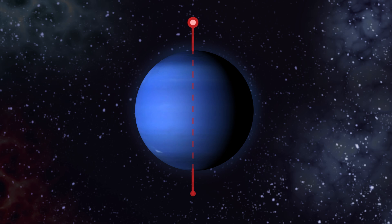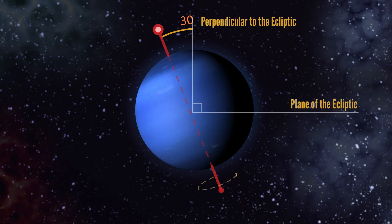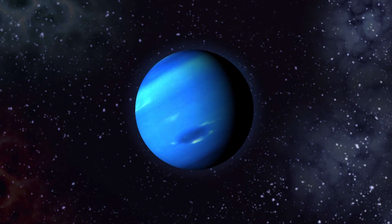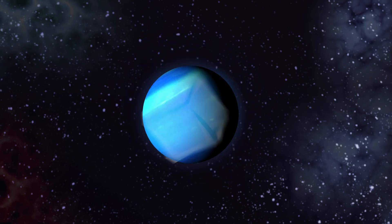Neptune is so far away and orbits so slowly its seasons take 40 Earth years to change. But Hubble telescope images showed us that Neptune's stripes change from winter to summer. Always cold though.